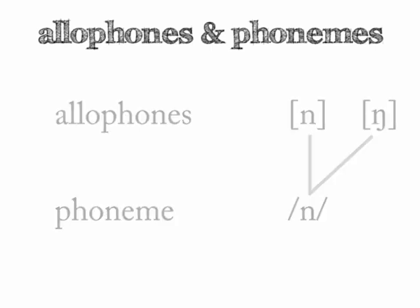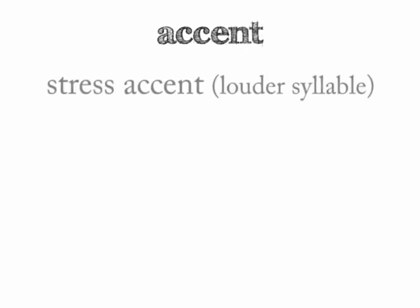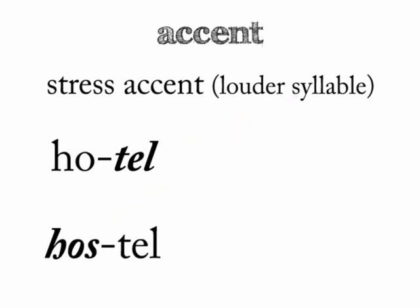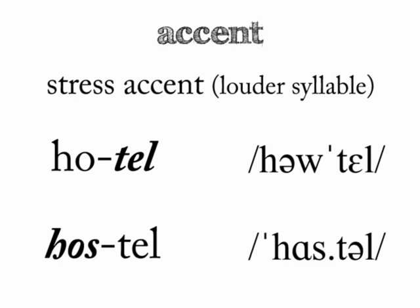Speech isn't just phonemes strung together into syllables and utterances — there are other features. One other feature is known as accent. Stress accent involves saying one syllable of a word louder than the surrounding syllables. We do this in English with words that have a fixed accent. For instance, in the word 'hotel,' the second syllable is pronounced louder than the first, while in the word 'hostile,' the first syllable is louder than the second. So in 'hotel,' the second syllable is given a stress accent. Stress accent is indicated in IPA by a small straight apostrophe before the stressed syllable. Notice that the syllable break symbol is dropped when the stress accent is added.